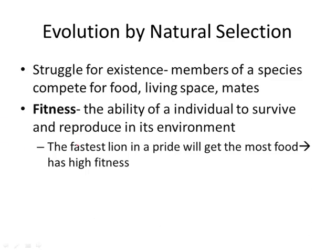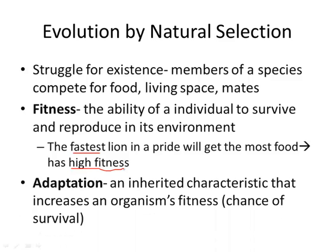For example, the fastest lion in a pride will get the most food, which means that lion has a high fitness compared to the slower lions, because they are more likely to survive and reproduce. This is because the lion has an adaptation — it inherited a characteristic, running fast, that increases its success and chance of survival.